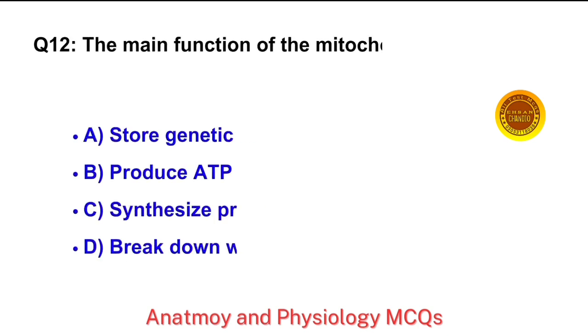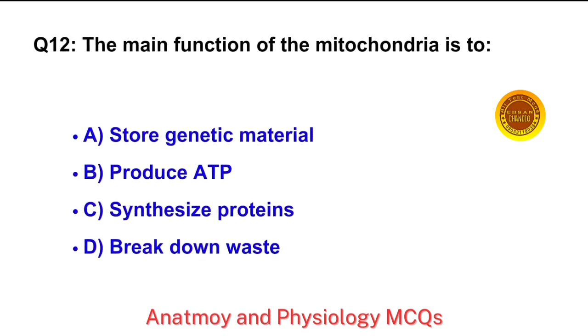Question No. 12. The main function of the mitochondria is — the right answer is option B: Produce ATP.